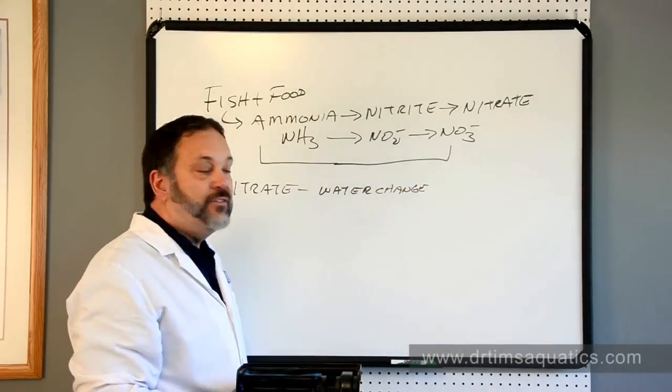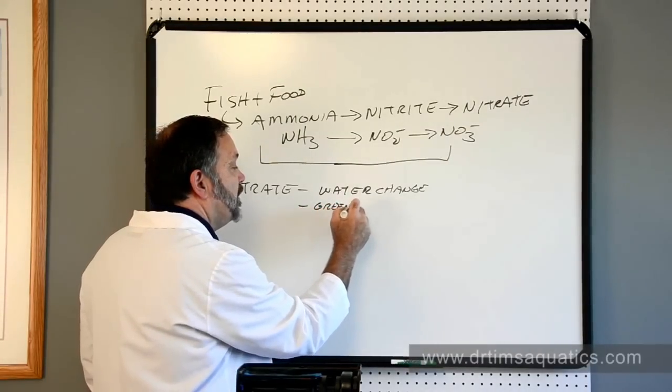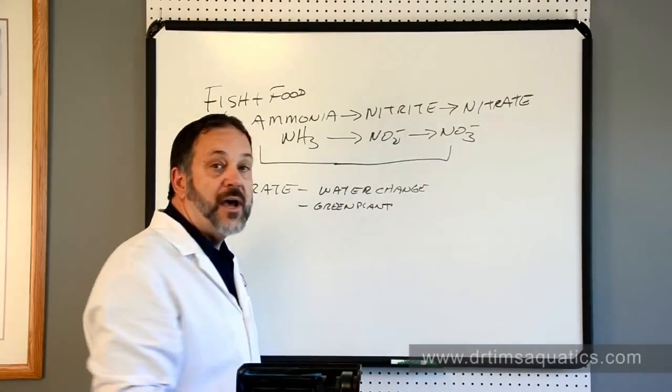Secondly, is to have some type of a green plant. So you can have green plants in your water, and they will take the nitrate right out of the water.